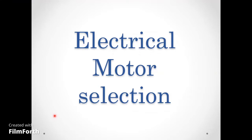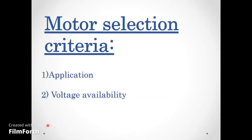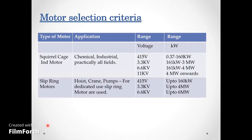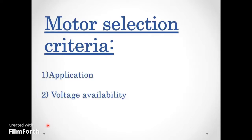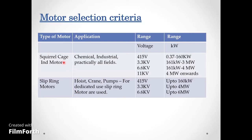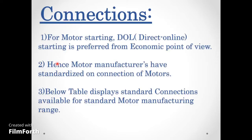Motor selection criteria depends on two types: applications and voltage availability. In terms of applications, there are two types of motors normally used in industrial projects — squirrel cage induction motors and slip ring motors.